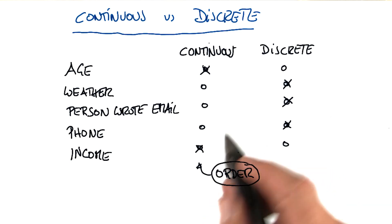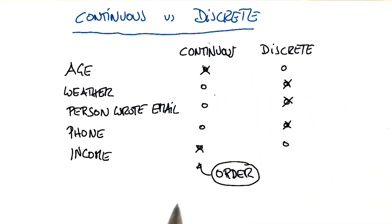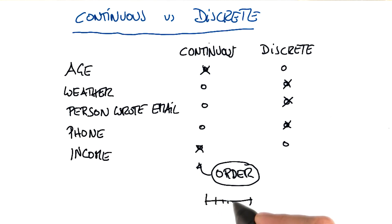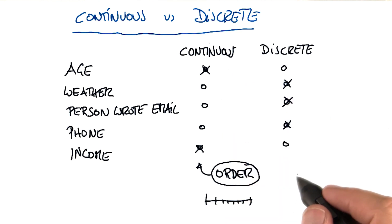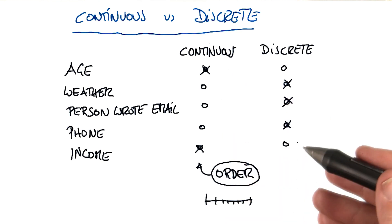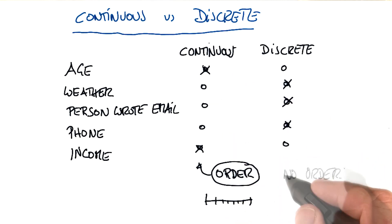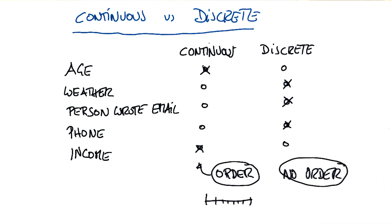If you find that there are many different outcomes and they fall into a linear order, where you can make greater or equal decisions, go continuous. If there are many outcomes and they're coded by numbers without an order, then you go discrete.